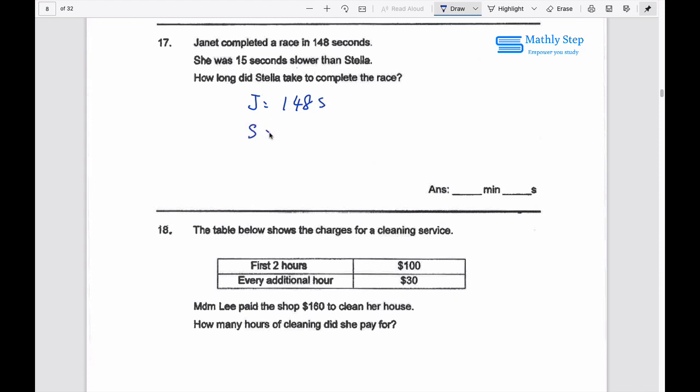So Stella takes 148 minus 15 seconds equals to 133 seconds because Stella is faster, right?